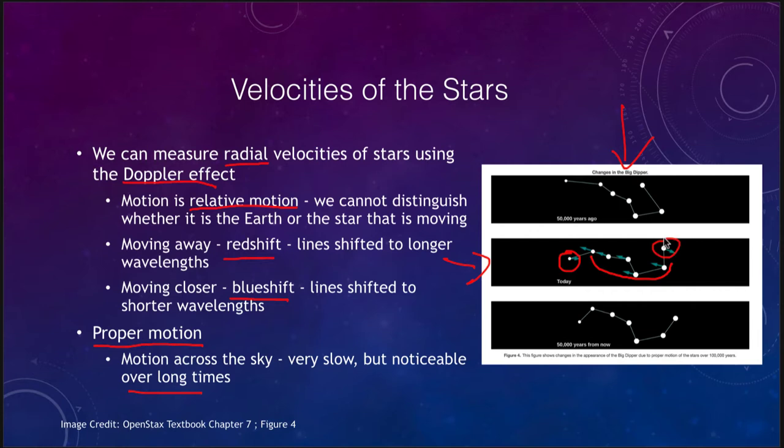However, the other two stars — the one on the end of the handle and the one on the end of the bowl — are moving in the opposite direction. So 50,000 years from now the handle will have curved a little more and the bowl part will begin to stretch out. It's not something one will notice in a lifetime, but over tens of thousands of years the appearance of the stars slowly changes. This would be what we call the transverse velocity.